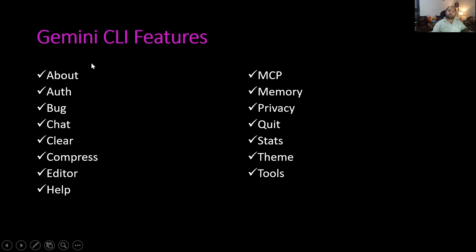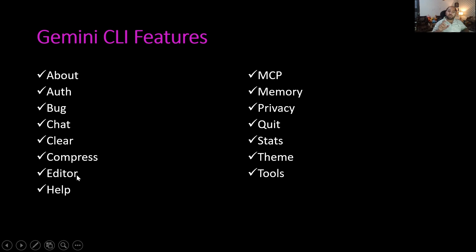Using About, we can check the version of Gemini CLI. Using Auth, we can change the authentication. During initial setup, we need to provide an authentication mechanism like Google account, Google API, or Vertex AI. Using Bug, we can report a bug. Chat is related to chat — we can clear the conversation history and compress the chat. Using Editor, we can change the configuration for the editor, for example whether we want to use an external editor. Using Help, we can find out the list of tools available within Gemini CLI.